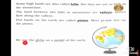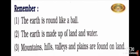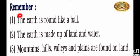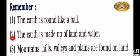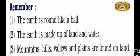We use the globe as a model of the earth. Children, always remember these points. The first one is: the earth is round like a ball. Second: the earth is made up of land and water. And the third is: mountains, hills, valleys, and plains are found on land.